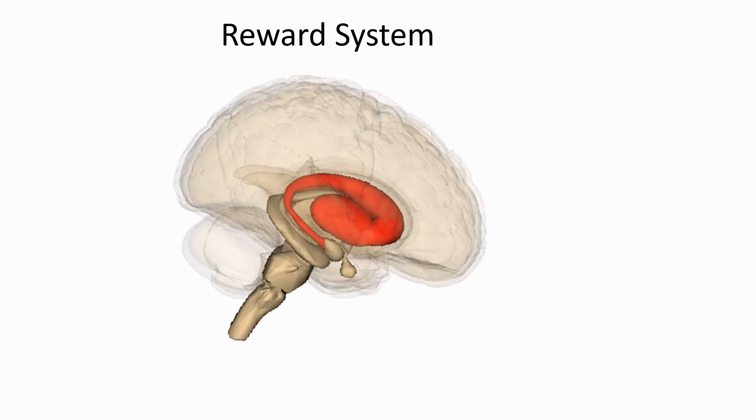It is helpful to divide up the brain into its different parts when we're trying to understand how it works. But you'll have noticed, even from this brief introduction, that the brain is massively interconnected, and no one part operates in isolation from the rest of the brain.